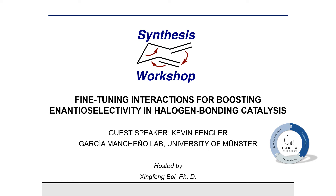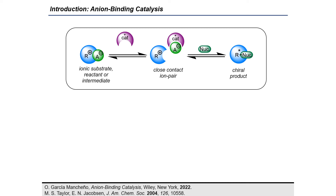In this catalytic approach, we have an ionic substrate where the anion can be captured by the catalyst to form a close contact ion pair. Due to this contact ion pair, it is easier for the nucleophile to attack and the reaction results in a chiral product.